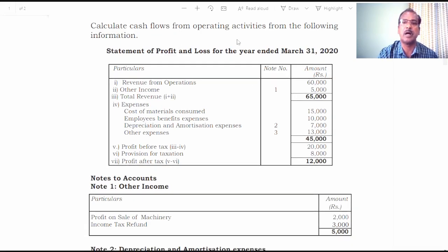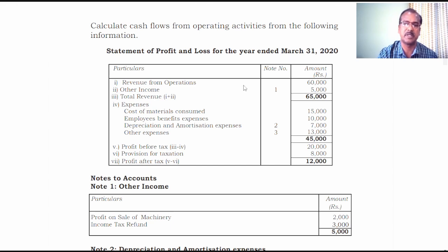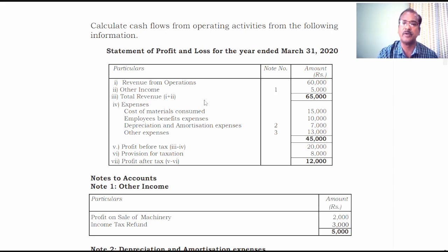Calculate cash flow from operating activities from the following information. The Statement of Profit or Loss for the year ended 31st March 2020 is presented below. The revenue from operations is 60,000 rupees and other income is 5,000 rupees, giving total revenue of 65,000 rupees.